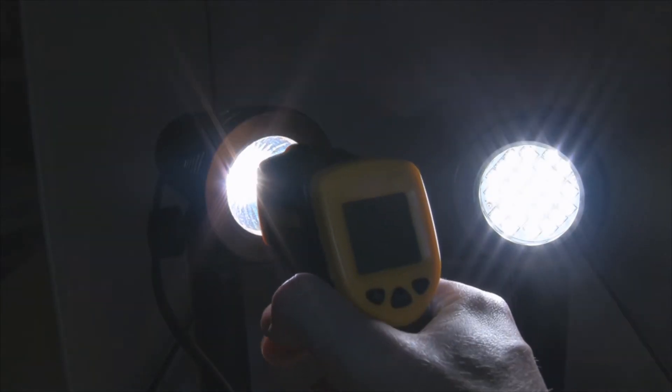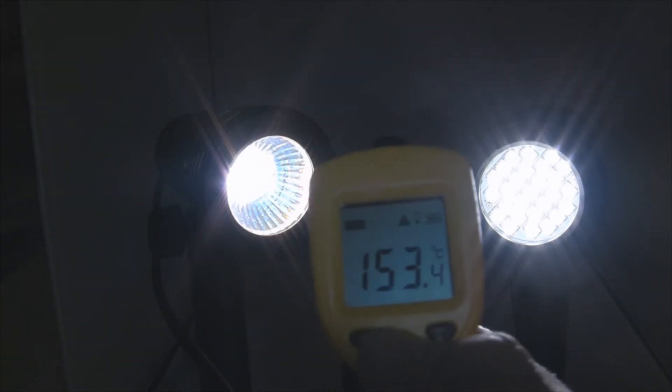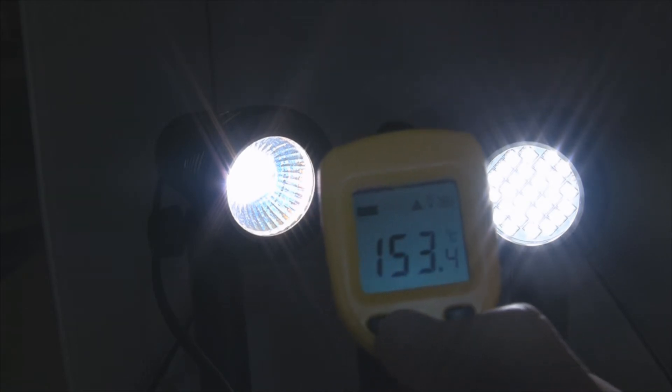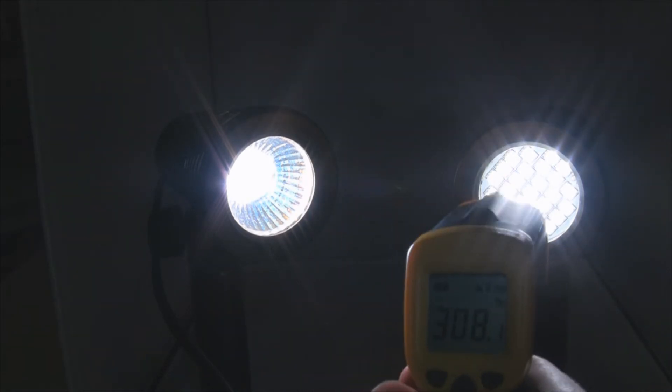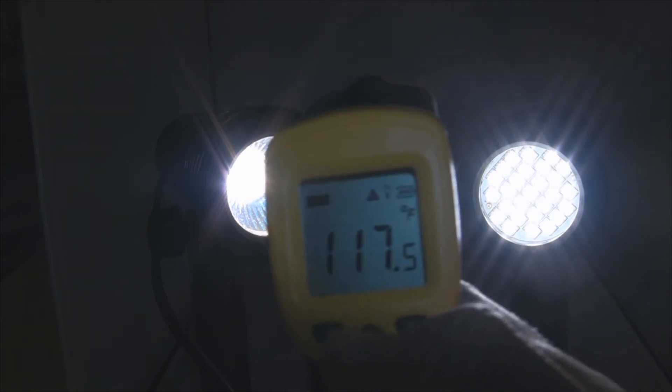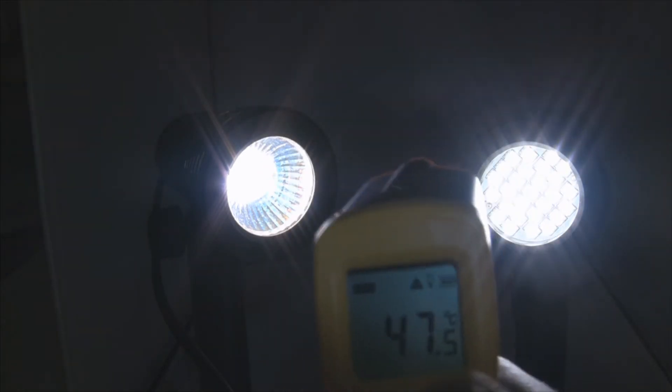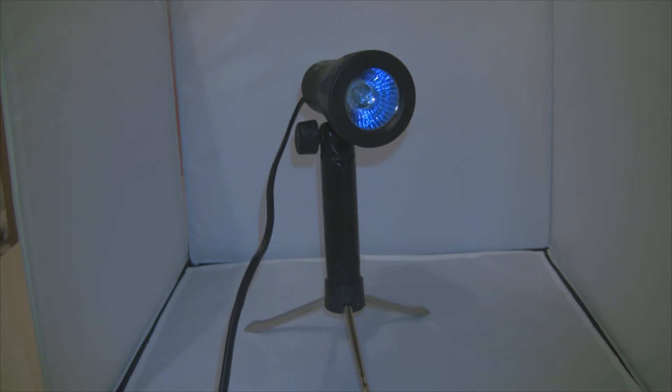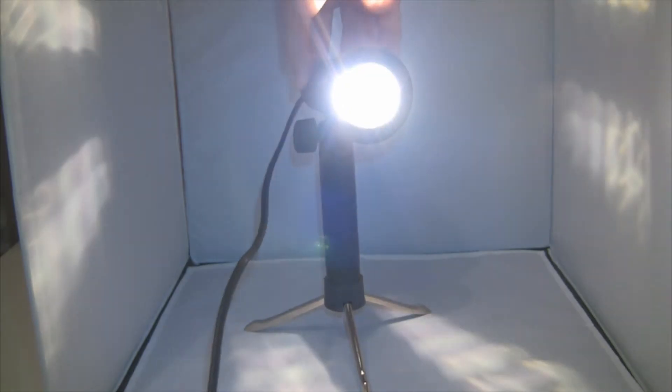And what about the actual filament bits? So 153 degrees Celsius and 308 degrees Fahrenheit for the halogen bulb. And 117 degrees Fahrenheit or 47.5 degrees Celsius. There is a huge difference in wasted energy.